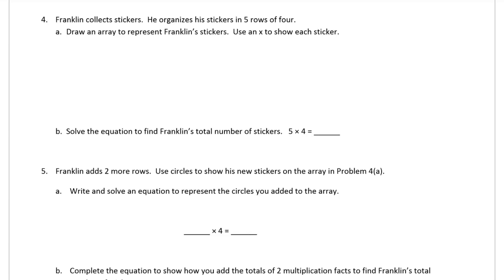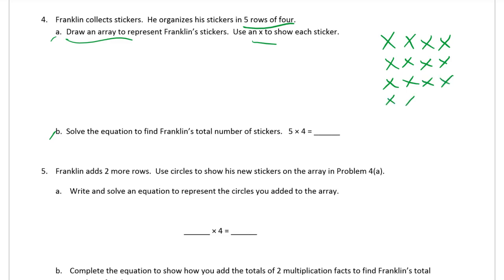Page two: Franklin collects stickers. He organizes his stickers in five rows of four. Part A: draw an array to represent his stickers, using an X to show each sticker. So we need five rows of four — one row of four, two rows, three rows, four rows, five rows of four. Done with part A.